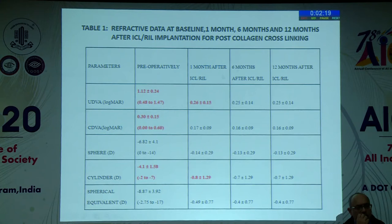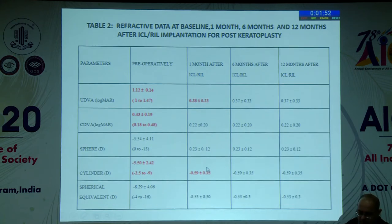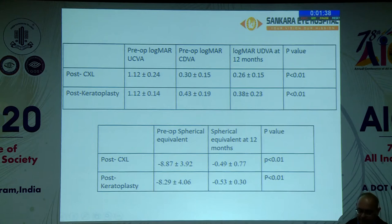For the secondary objective comparing visual outcomes in both groups, postoperative UCVA was better than the preoperative BCVA — likely because the phakic IOL near the nodal point reduces aberrations and overcomes spectacle minification. In post-C3R cases, average cylinder reduced from minus 4.1 to minus 0.8 diopters. In post-keratoplasty cases, a cylinder range of minus 2.5 to minus 9 was corrected — average minus 5.5 reduced to minus 0.59. At 12 months there was significant improvement in visual acuity and a significant drop in spherical equivalent.